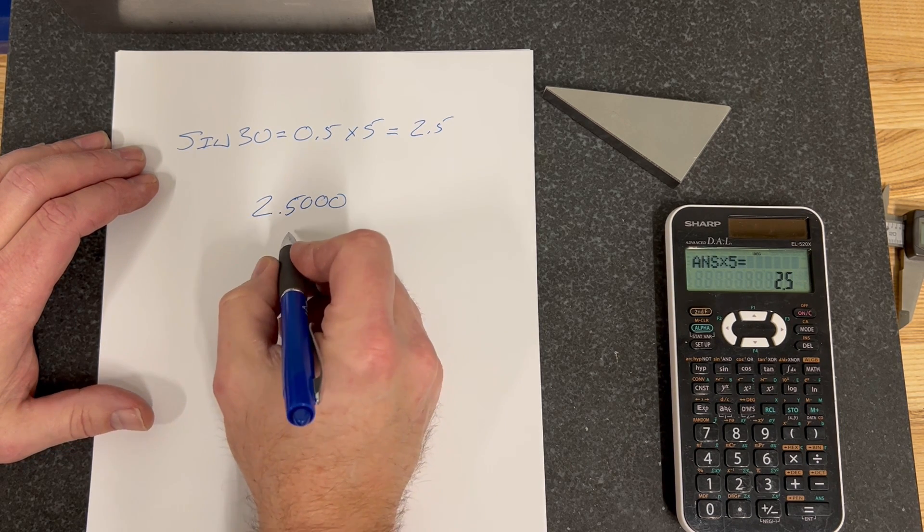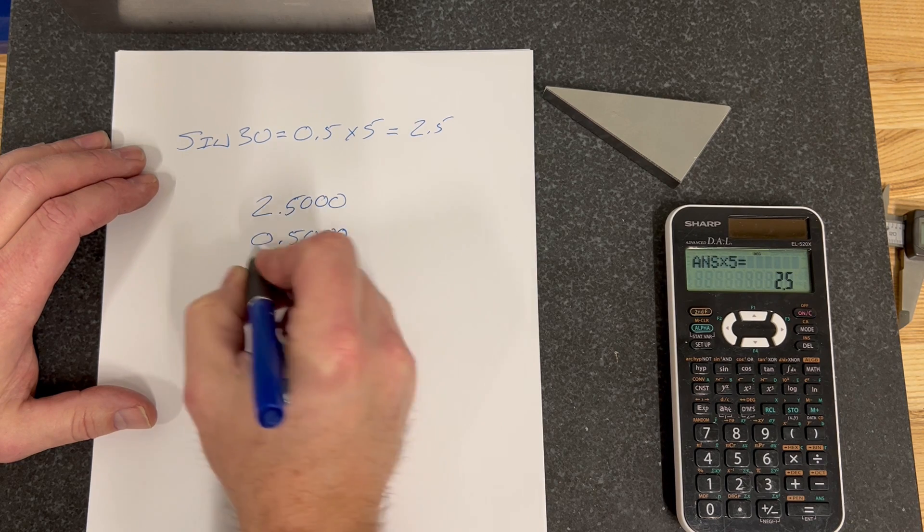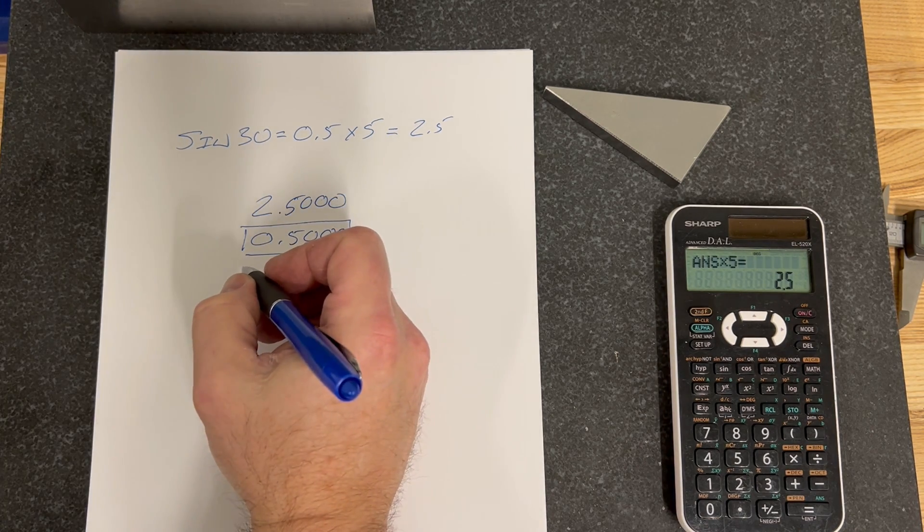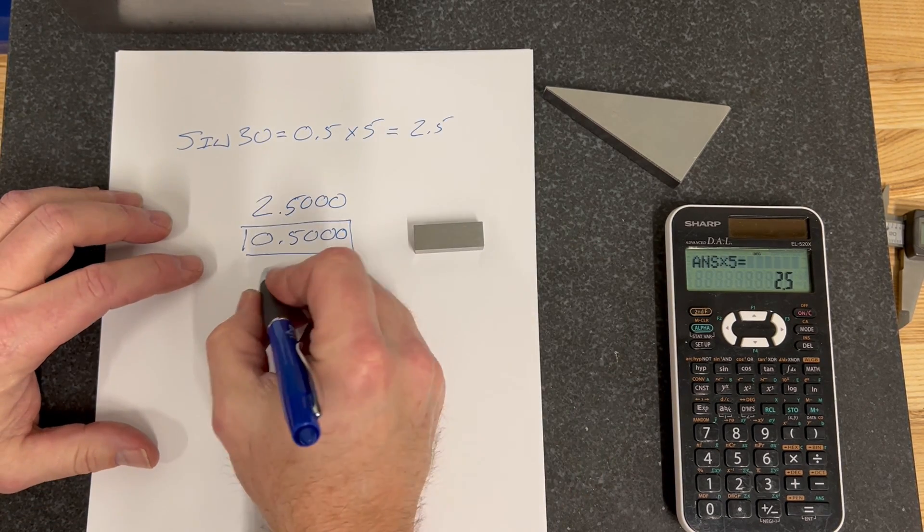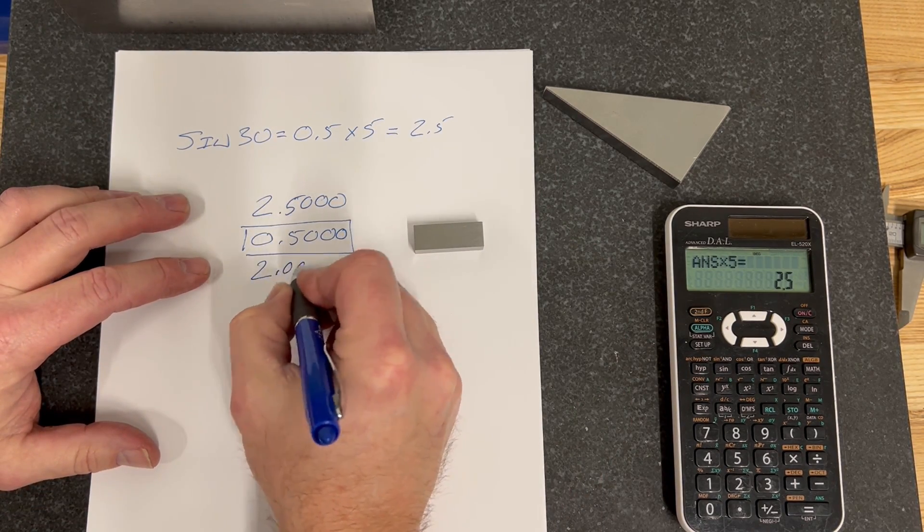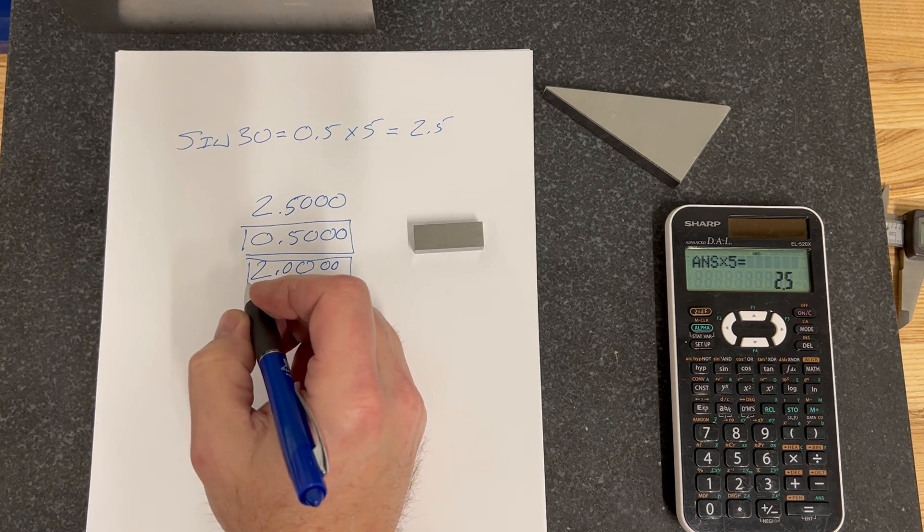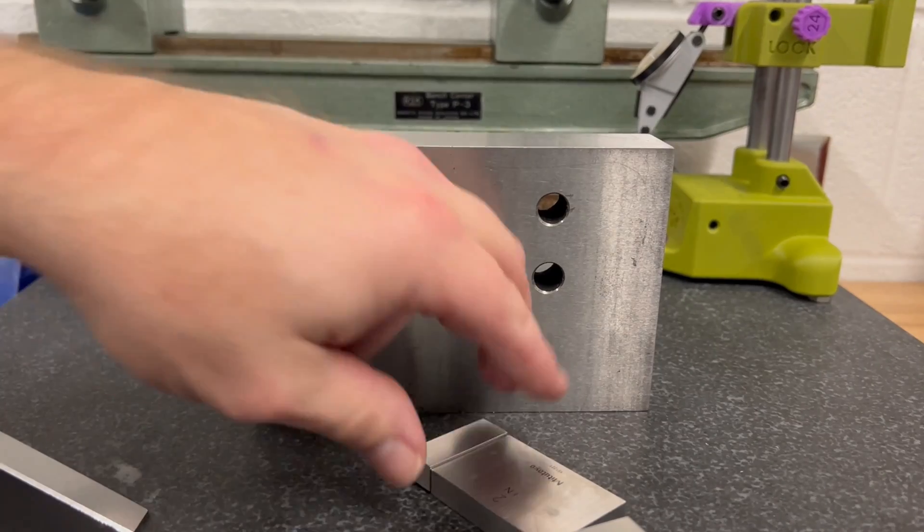We're going to use a half inch gauge block first. So 0.5000, that's going to be our first block, which is a half inch block. It looks like this guy, it's block one. And then we only have two inches left, and that is going to be our second block. So we only have two blocks in this build up.